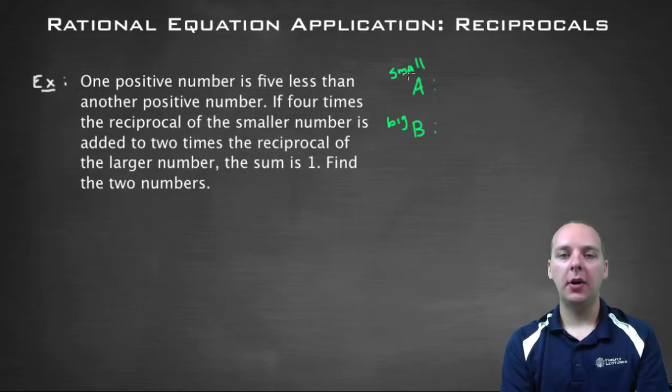So we have a small number we'll call it A, we have a big number we'll call it B. And the first step, the first thing we want to do is try to put some variables in here to where we're relating the two numbers to each other.